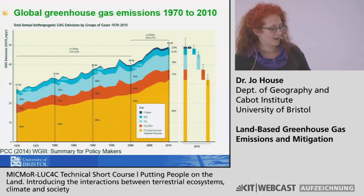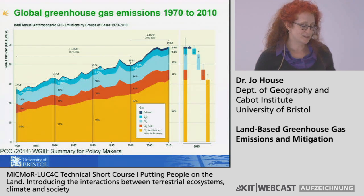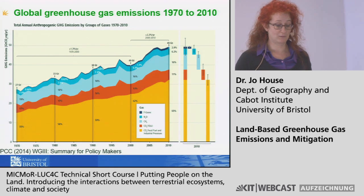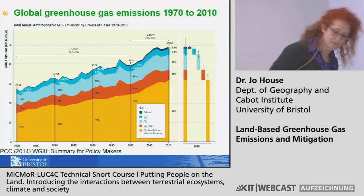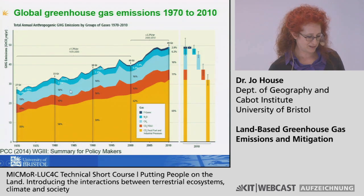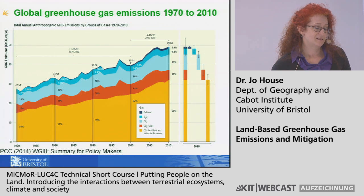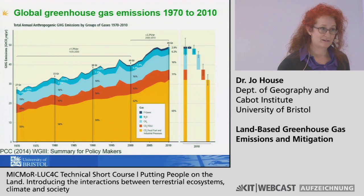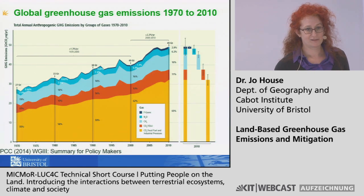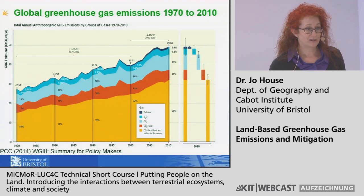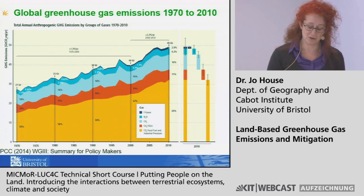This is a figure we put together for the IPCC that went in the summary for policymakers, looking at global greenhouse gas emissions from 1970 to 2010. We've got CO2 emissions from FOLU. There's a change of acronym here: in the UNFCCC and Kyoto Protocol they tend to use LULUCF — Land Use Change and Forestry — while the IPCC talks about emissions from agriculture, forestry, and other land use: AFOLU. Those agriculture and forestry/other land use used to be completely separate chapters in IPCC Working Group 3 and have been brought together into one chapter.